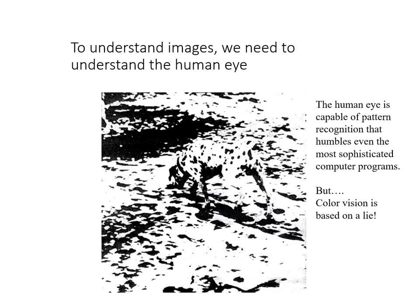The human eye is capable of pattern recognition that we haven't been able to match with even the most sophisticated AI programs. You should hopefully be able to see that there is a dog in this picture. But color vision is fundamentally based on a lie that your eyes and your brain are telling you.